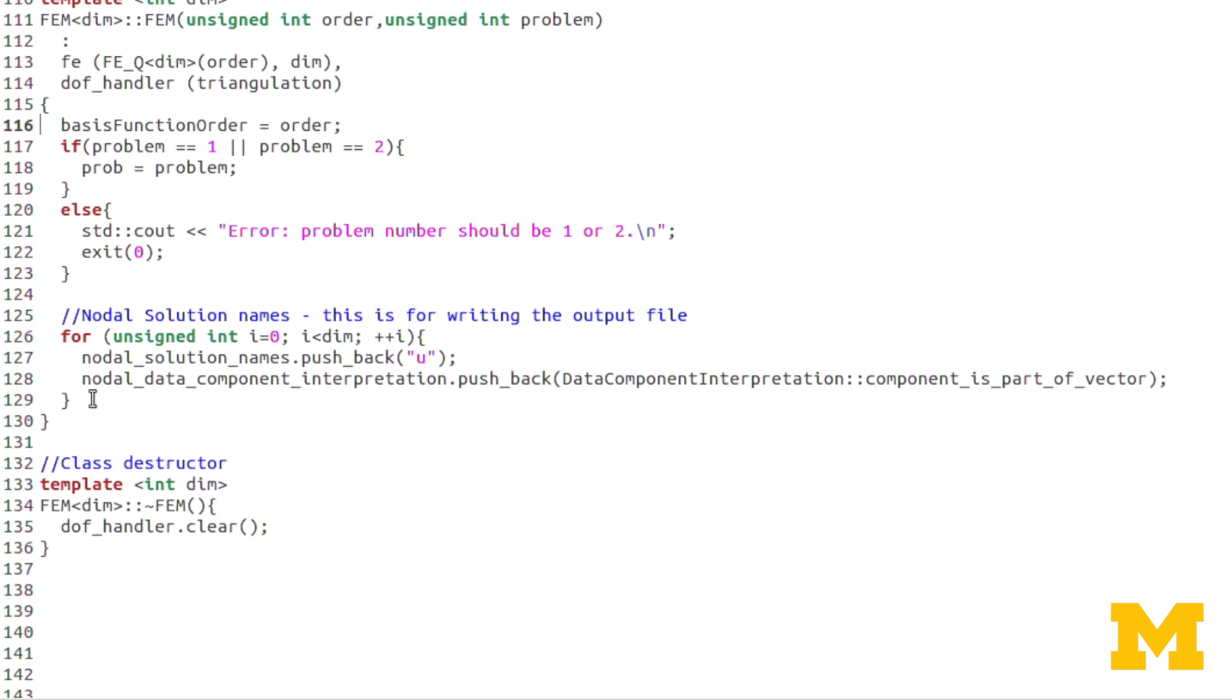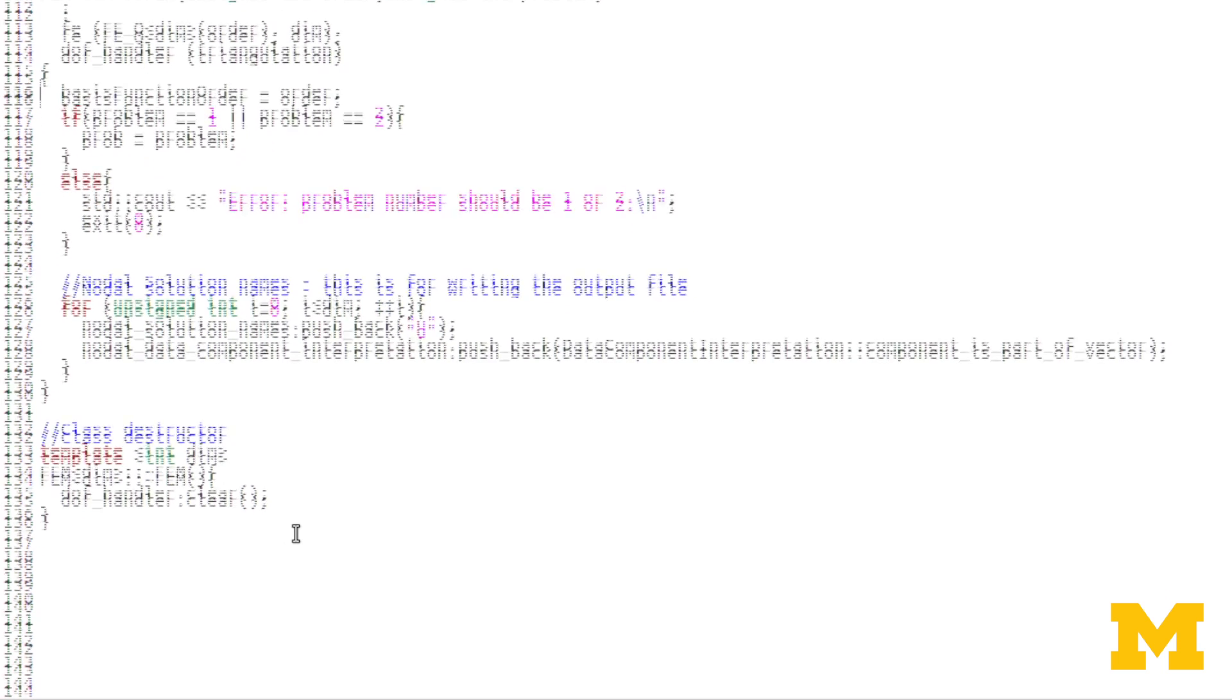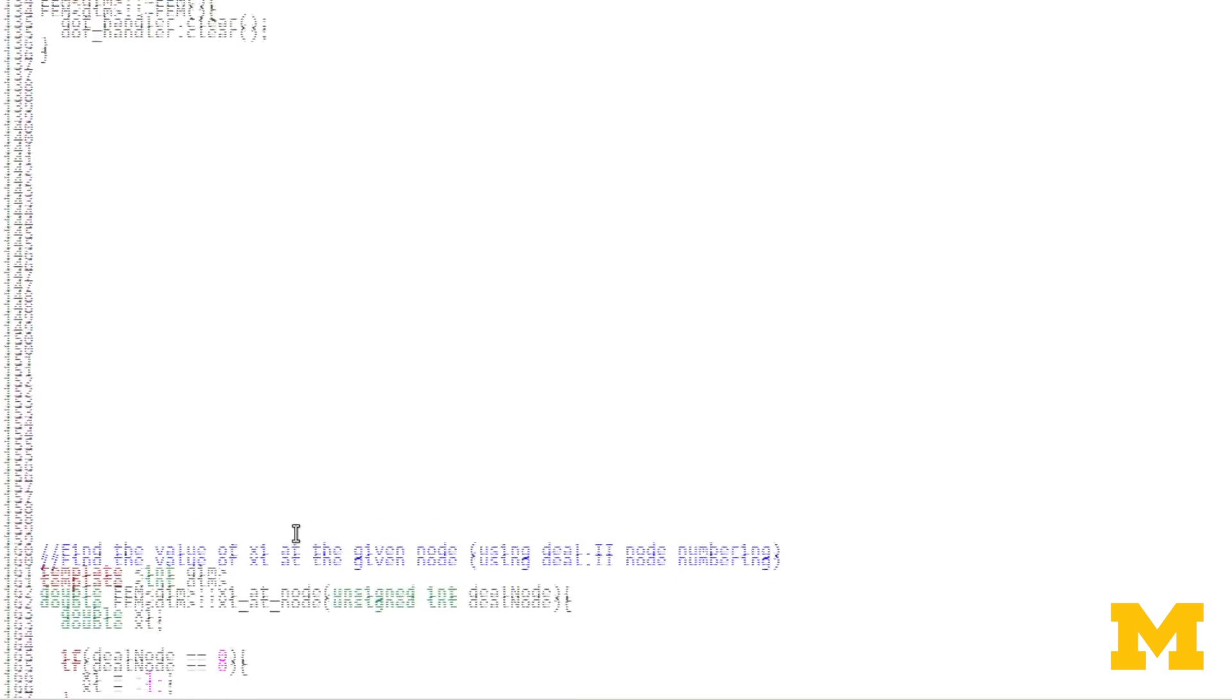The second part of the constructor, again, has to do with the solution names for the outputting results. So I won't look too much at that. The destructor is short, but there is something in it. DofHandler.clear. Again, that's something going on with the deal.II data object. So I won't go into that too much either. All right. So that's the constructor and destructor.